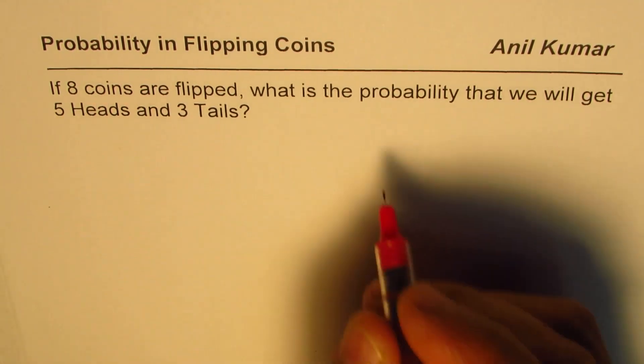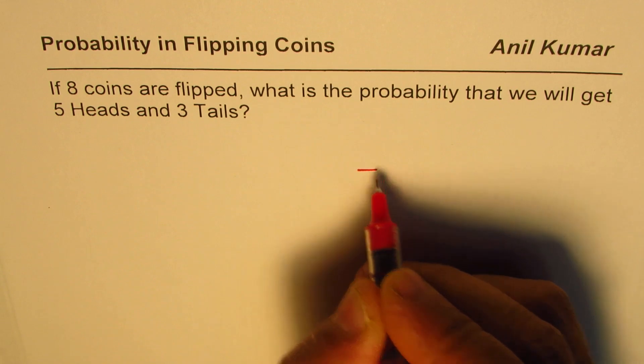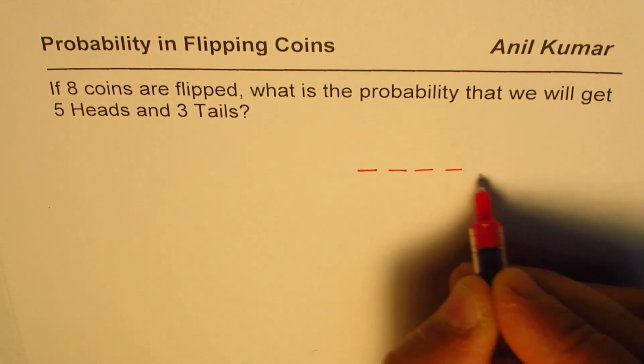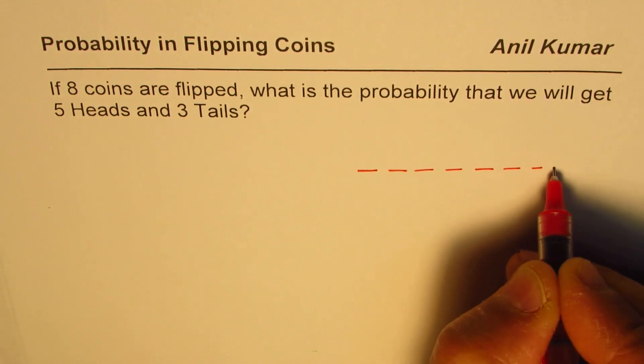We are seeing 8 coins are flipped. So that means there are 8 positions: 1, 2, 3, 4, 5, 6, 7, 8.